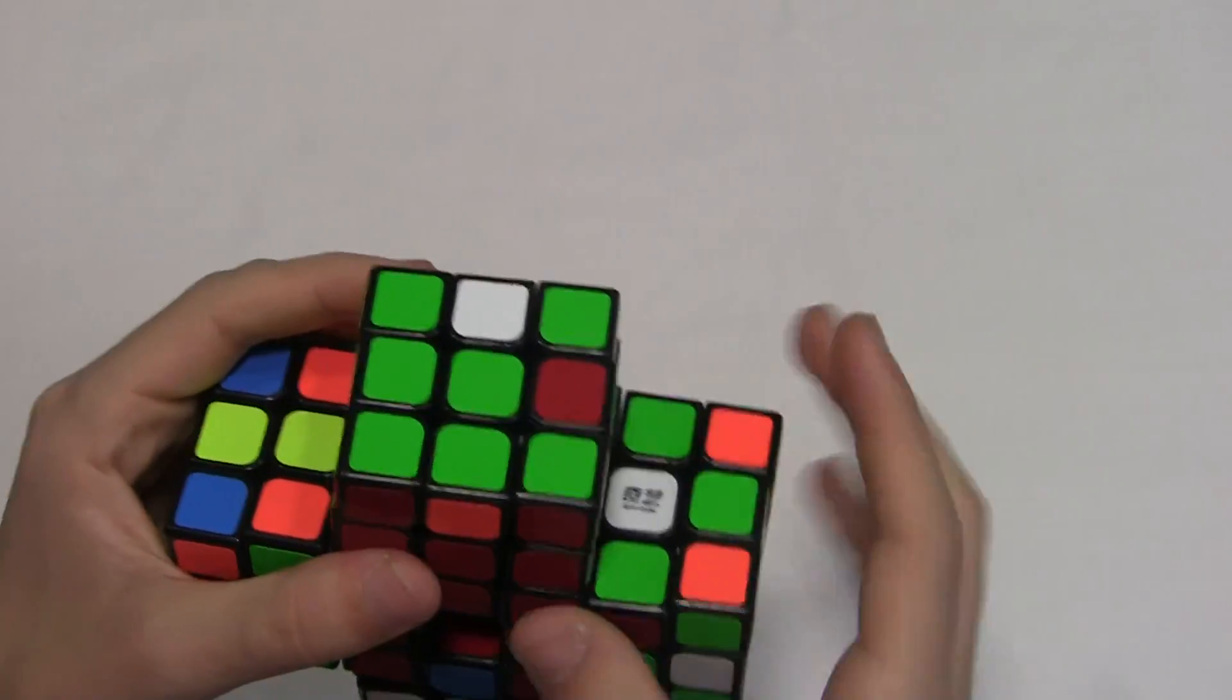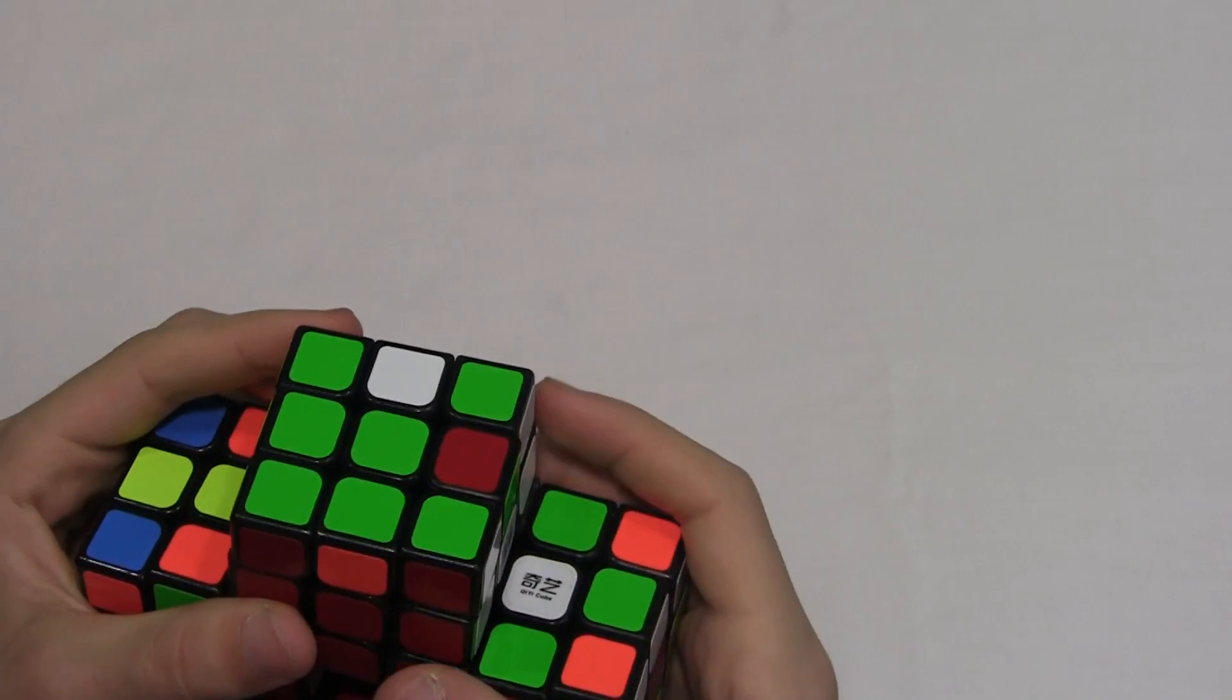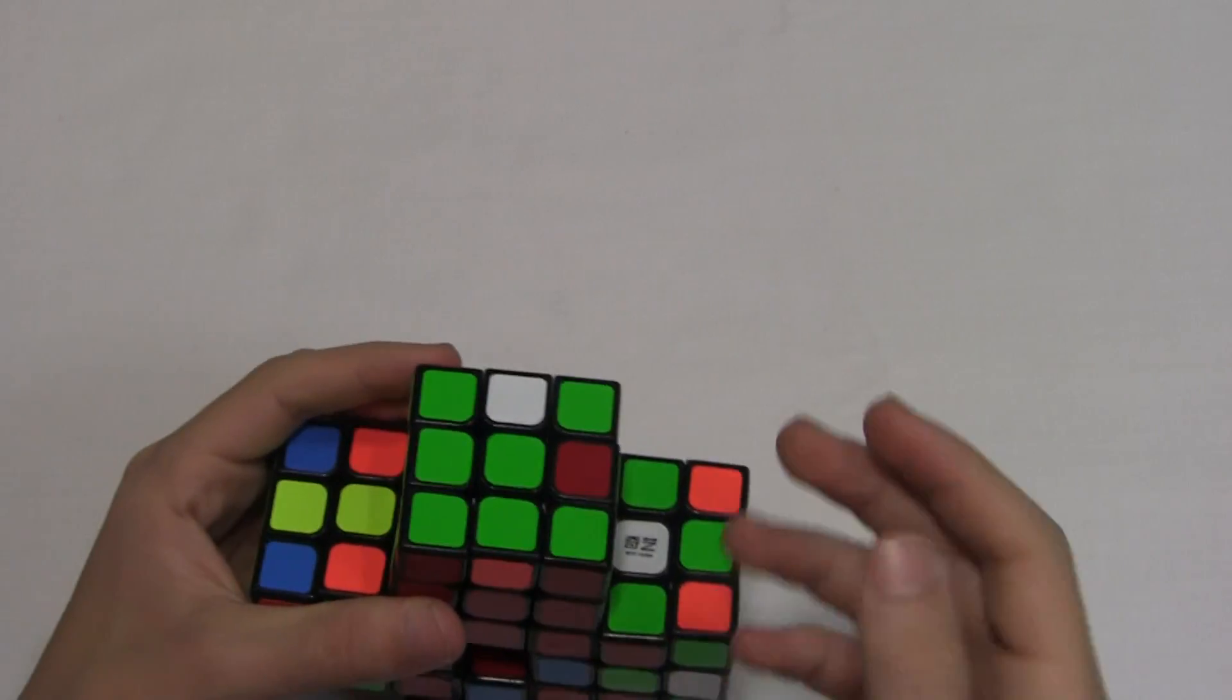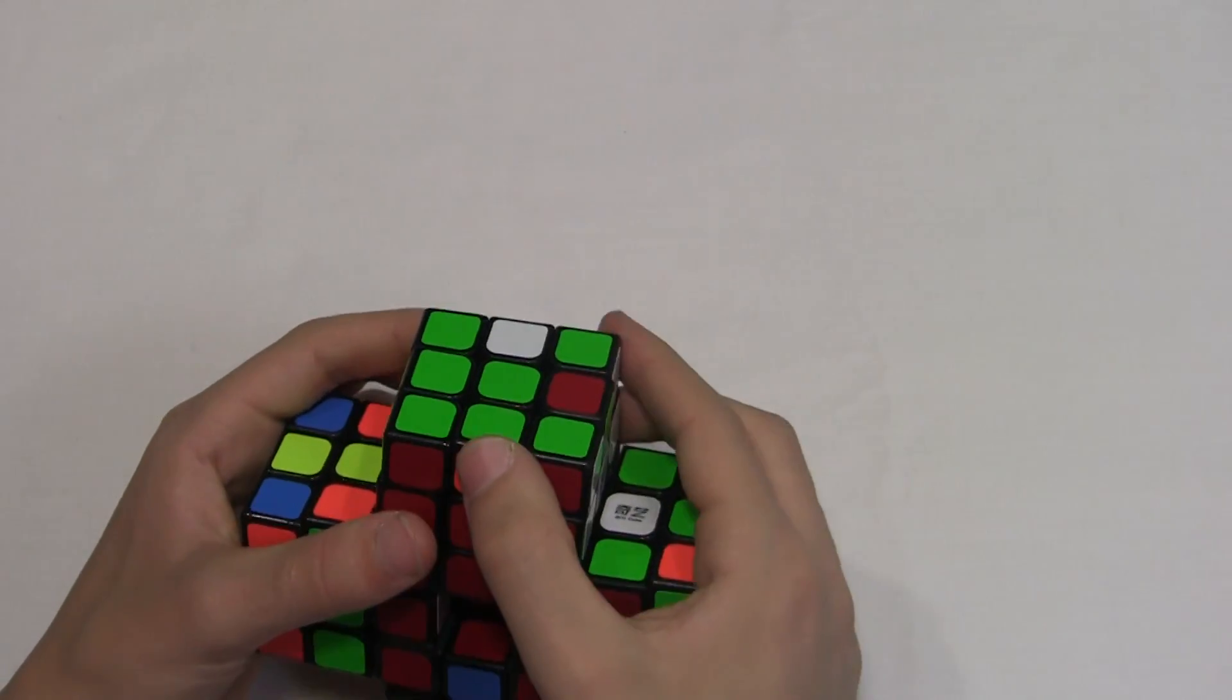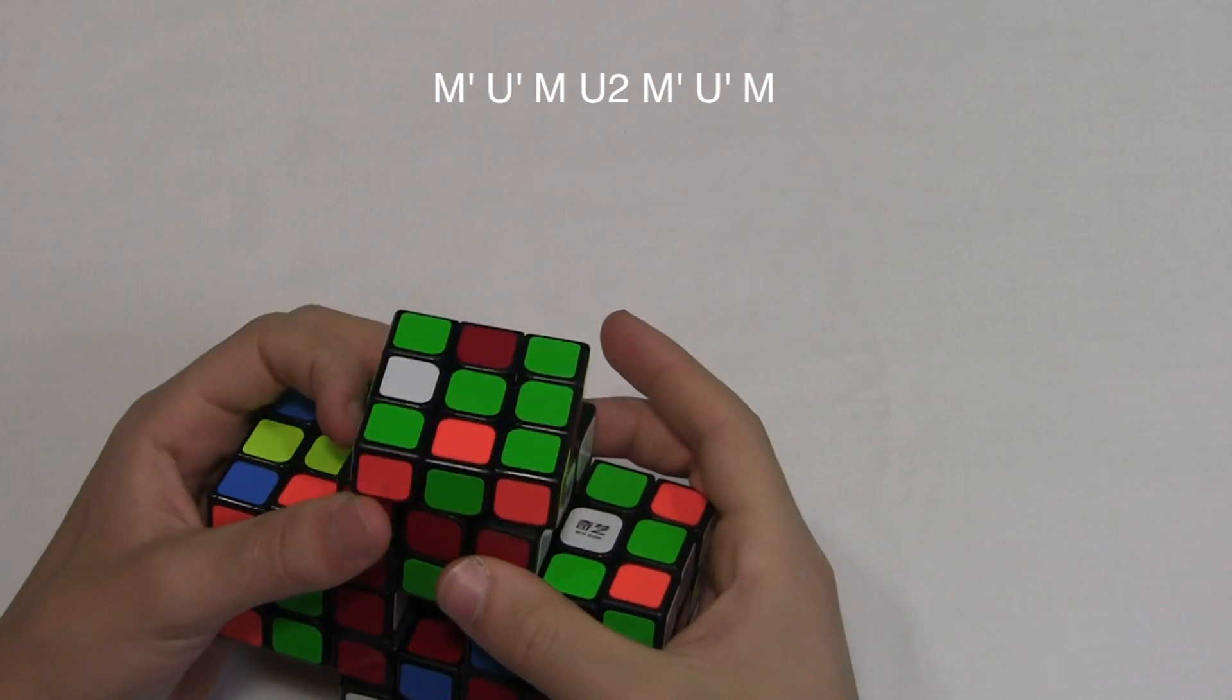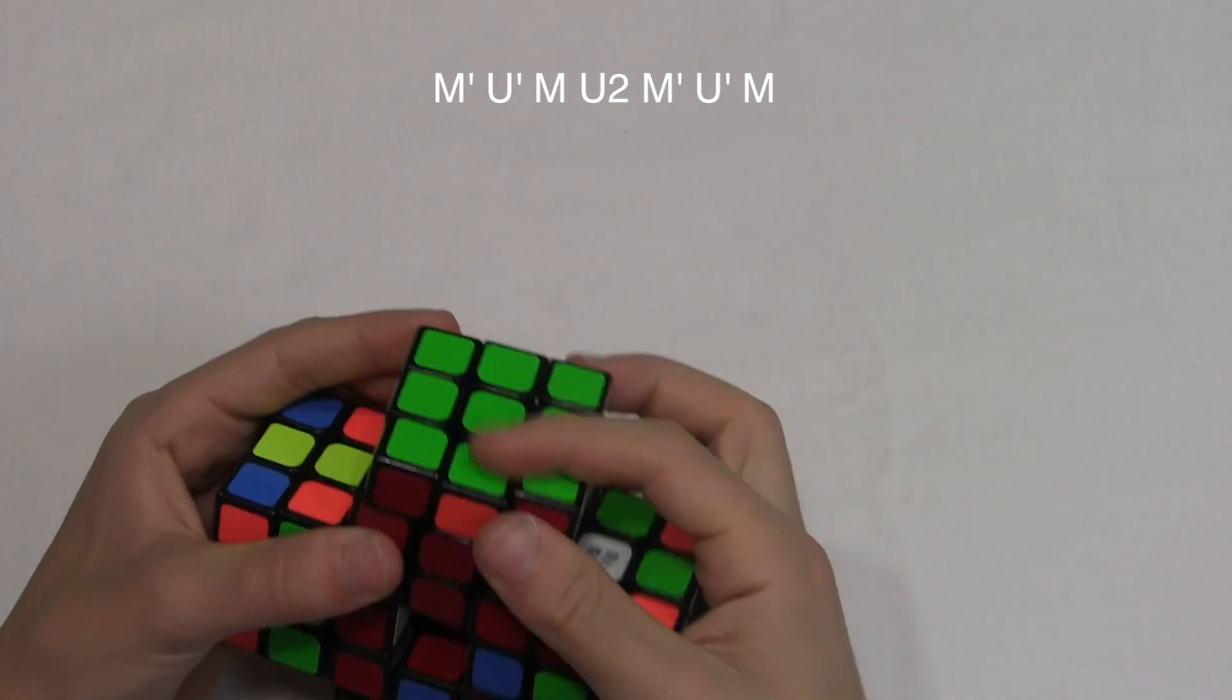Now, you just simply apply an algorithm, a simple algorithm. You can pretty much only know two algorithms to solve this cube. And that is M prime, U prime, M, U2, M prime, U prime, M.